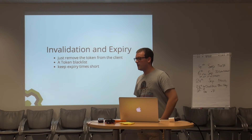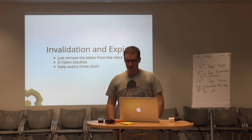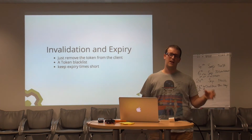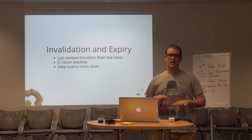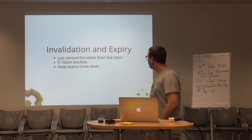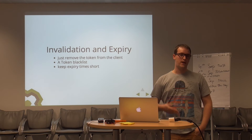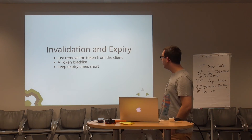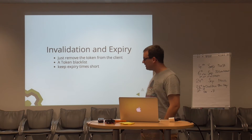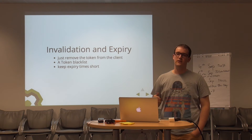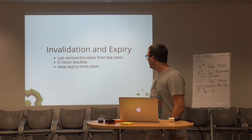What's interesting about tokens in general, or in this case JWT, is: how do we expire them? How do we handle expiration or maybe a logout? There's no clear definition and everyone is doing it a bit differently. Basically you can just remove the token from the client — that's the easiest way, and then it will expire and no one can use it anymore. You can do a token blacklist. What's really important: you should keep your expiry times quite short, but I think it's the same with sessions — they shouldn't be too long either.